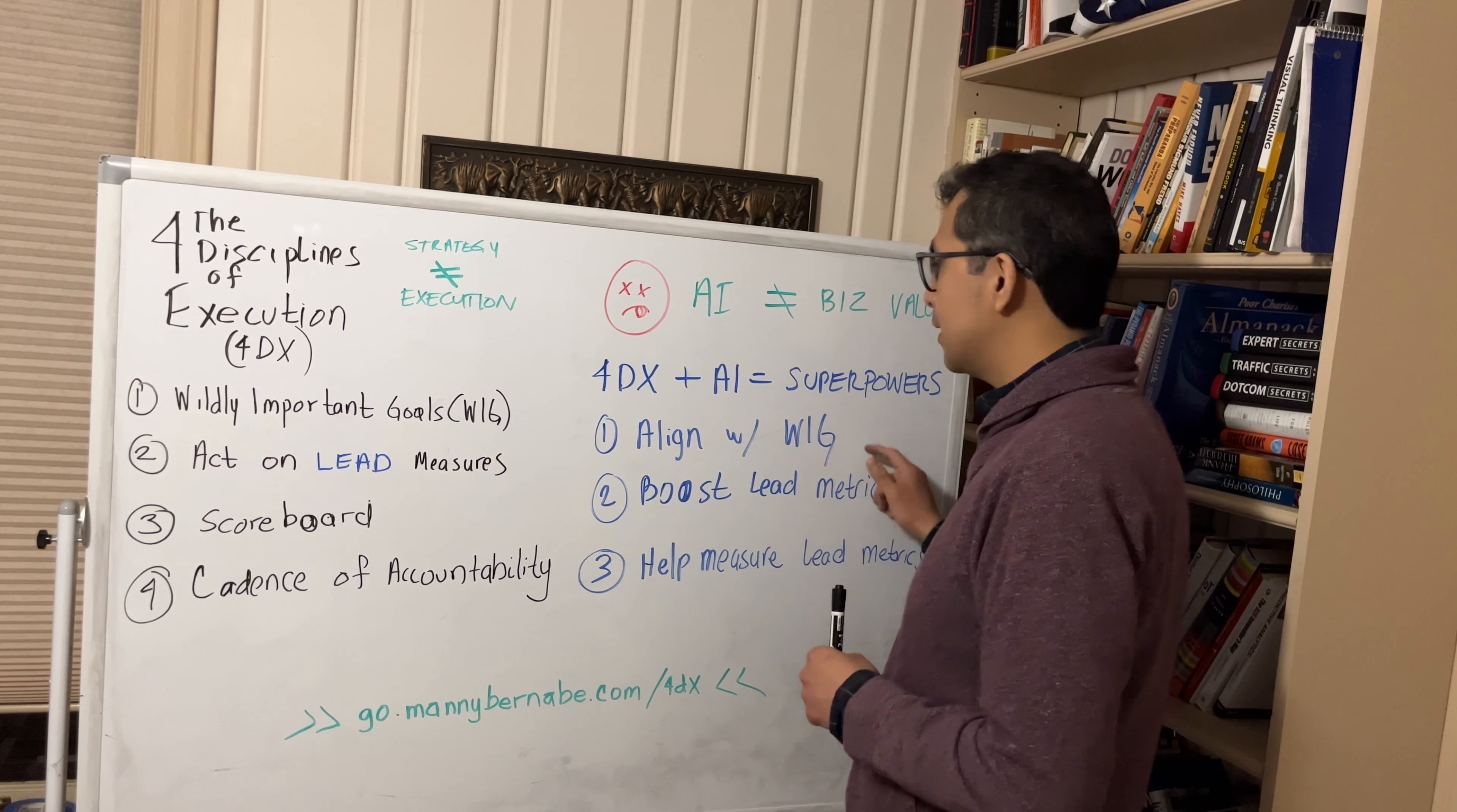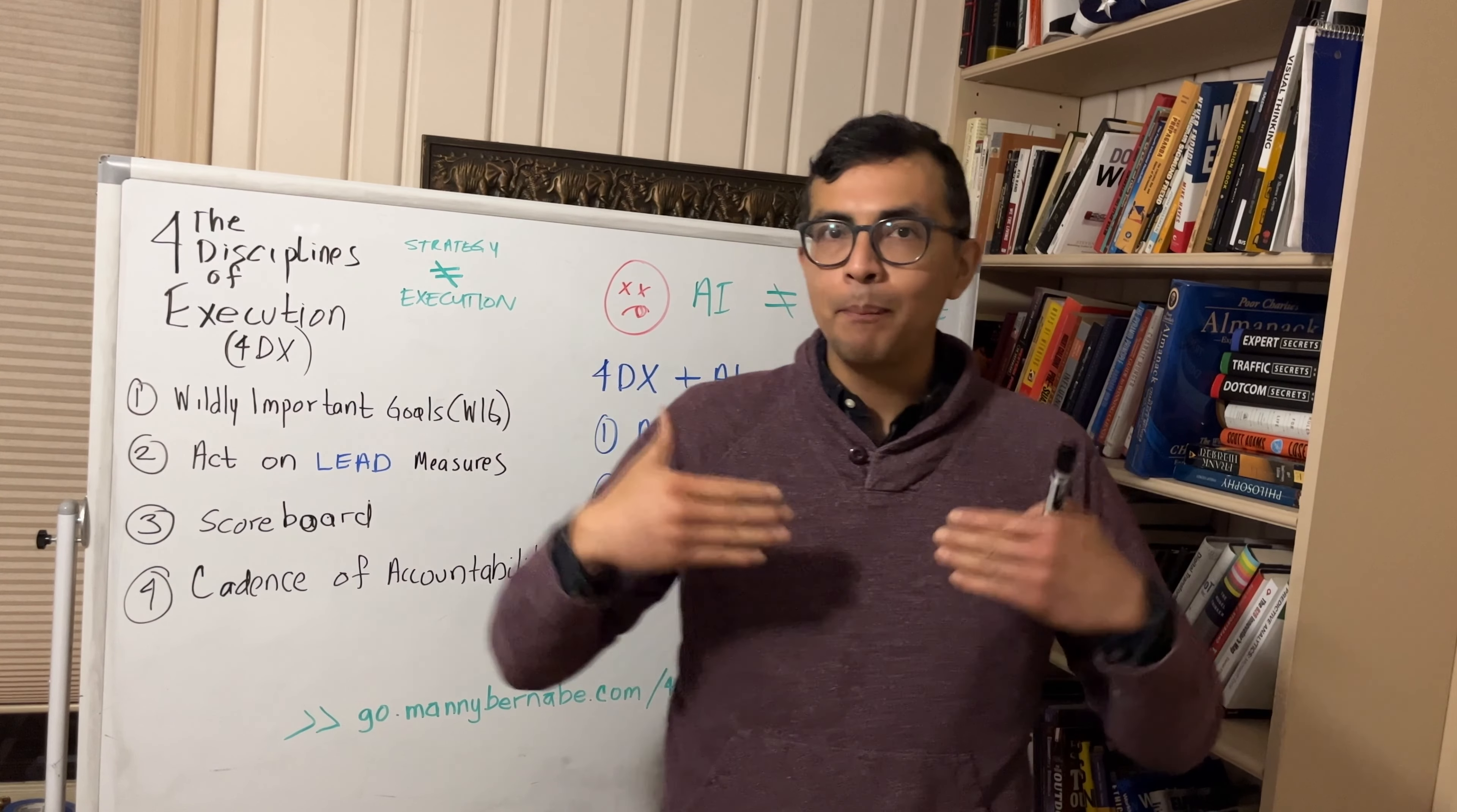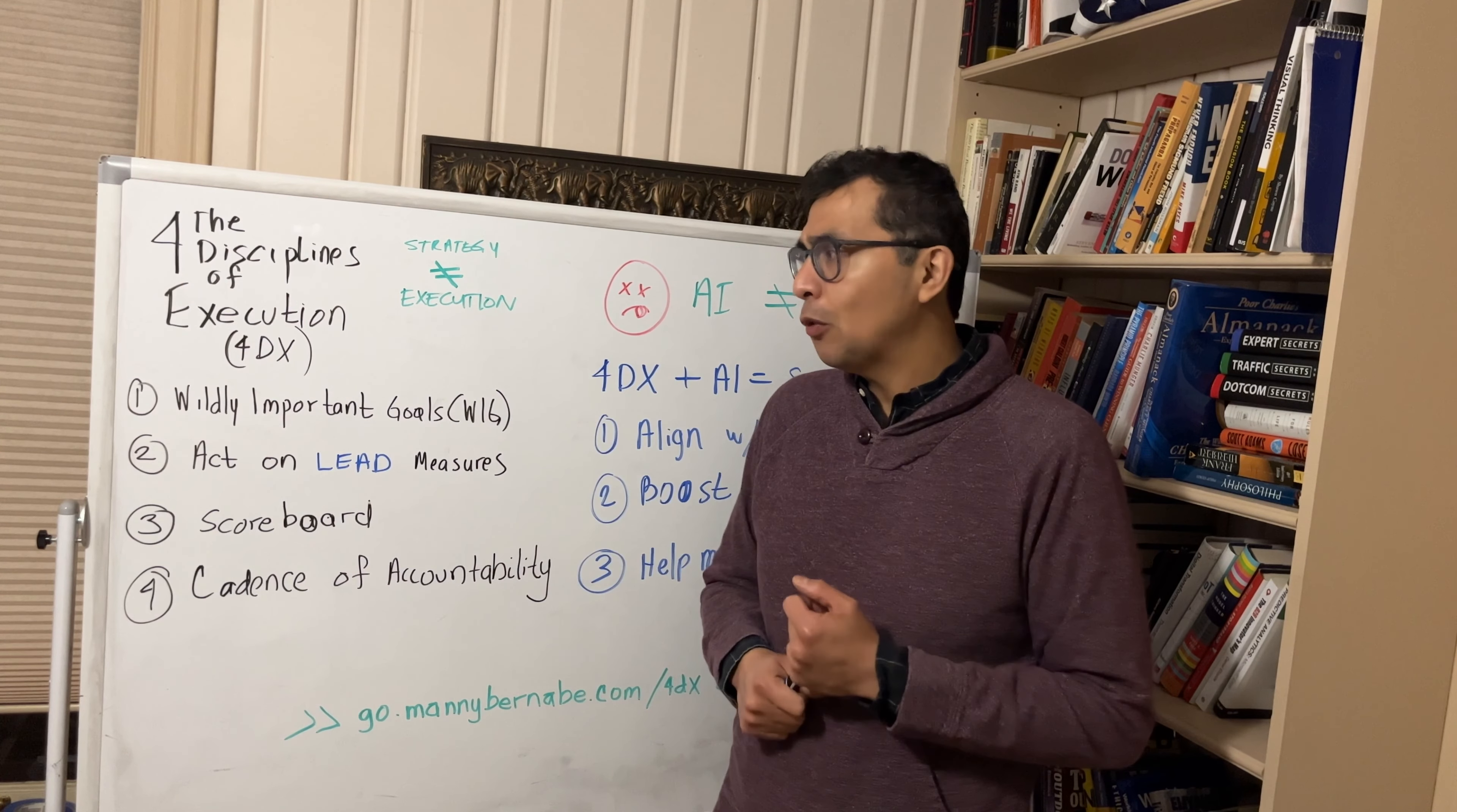So number one is aligning AI projects with the overall WIG. There's been a number of times when I've been brought into a team to do AI analytics, data-driven type of work, and I want to help them. But if they don't have an overall WIG, an overall big goal that they're working towards, it's difficult for me to do that. It's difficult for me to build a model for generating the results that are going to be valuable if they themselves don't know what results are valuable. And that happens quite a bit.